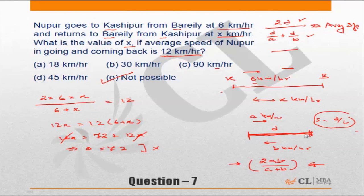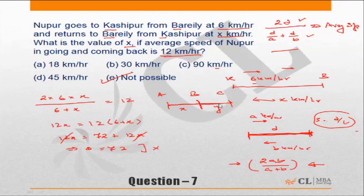The formula also applies when you go from point A to B to C, where speed from A to B is x kilometers per hour and B to C is y kilometers per hour, and B is the midpoint of AC. Effectively, if you are covering the same distance at two different speeds, you can apply this particular formula.